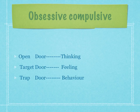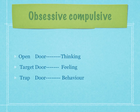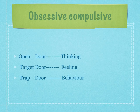Their open door is thinking, target door is feeling, and trap door is behaviour. So if the therapist has diagnosed that the person is coming from an obsessive-compulsive adaptation, they would be best served in terms of attunement by asking thinking questions, rather than feeling questions or observing their behaviours. The target door is where the person really wants to go in terms of underlying processes, and the trap door is what the therapist keeps away from, because people who are obsessive-compulsive don't like behavioural change.